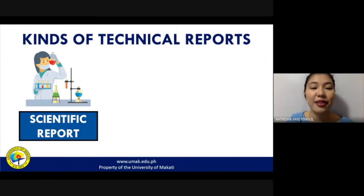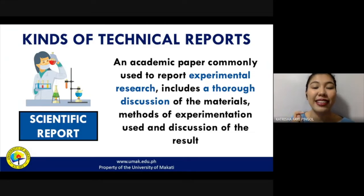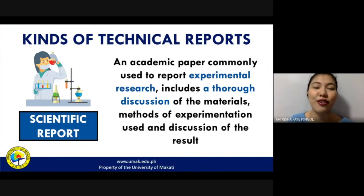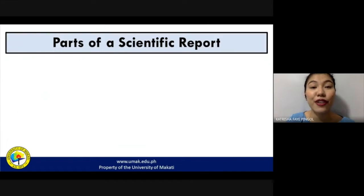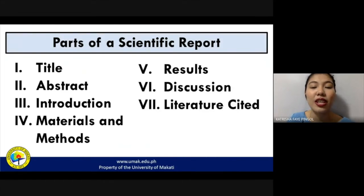The next kind of technical report is a scientific report. It is a type of academic paper commonly used to report experimental research. A scientific report will often include a thorough discussion of the materials used, your methods of experimentation, and the discussion of the results of your experiment. The different parts of a scientific report are: title, abstract, introduction, materials and methods, results, discussion, and literature cited.